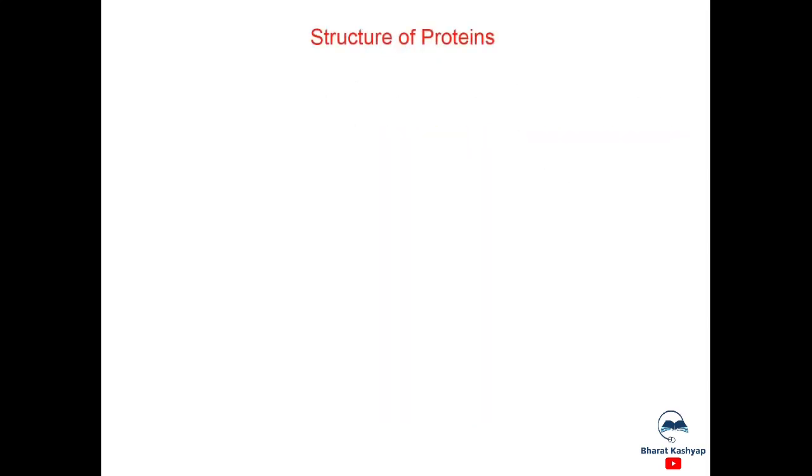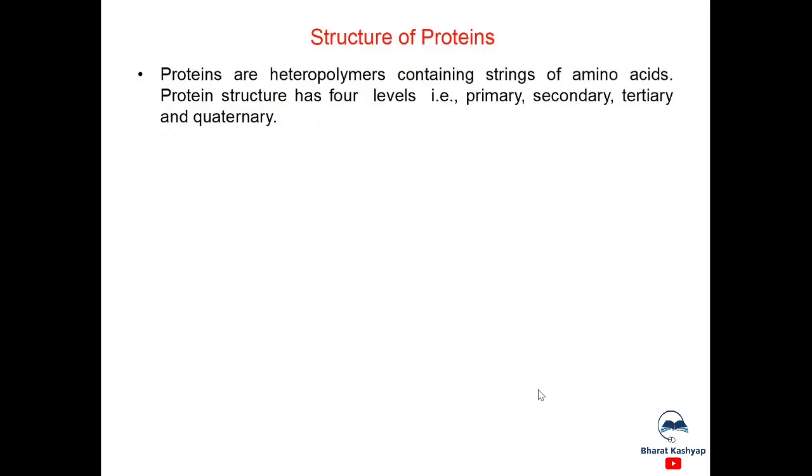Now, let us discuss structure of proteins. Proteins are heteropolymers containing strings of amino acids. Protein structure has four levels that is primary, secondary, tertiary and quaternary depending upon complexity of protein.